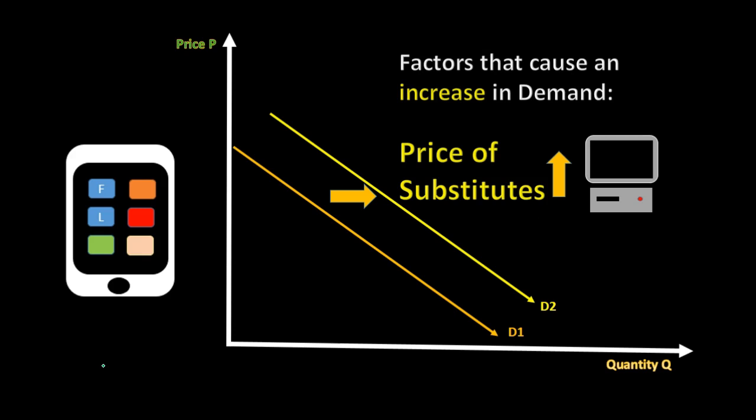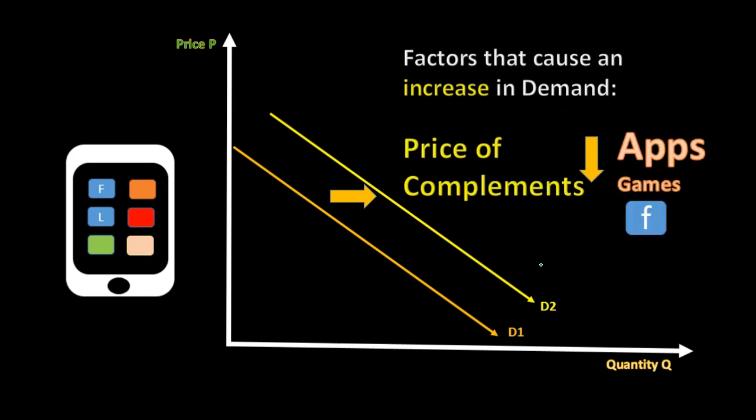We could also have a price of substitutes shift demand. For example, if the price of a normal computer goes up, people might say they'll just buy tablets instead. If the price of a substitute — something that can take the place of a particular product — goes up, that can shift the demand curve out for the product in question.